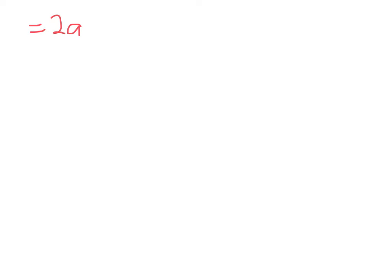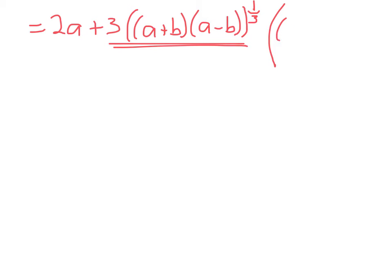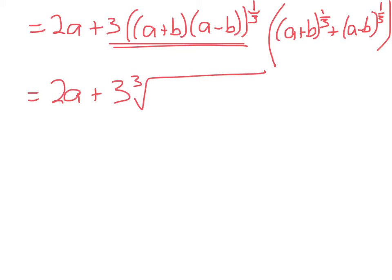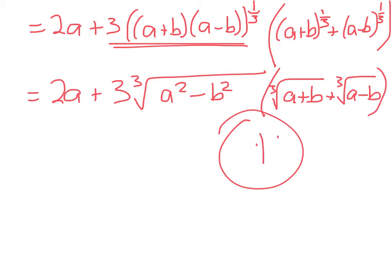Right, so I'll keep going on the next slide. Okay, so that equals 2a plus 3 common factor here of a plus b times a minus b to the power of one-third. Right, so I'm just factorising taking this as the common factor and then I get a plus b to the power of one-third plus a minus b to the power of one-third. Okay, and that equals 2a plus 3 times the cube root of a squared minus b squared times the cube root of a plus b plus the cube root of a minus b as required. Okay, so that's the first part of question one.